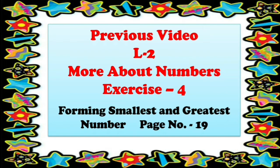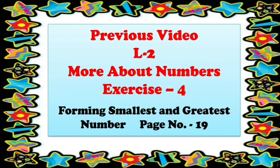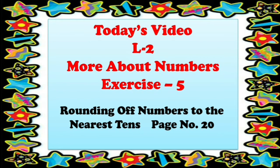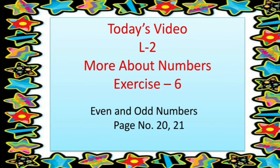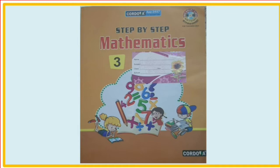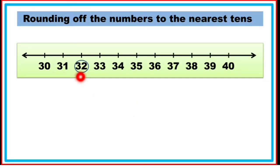In our previous video, we did exercise 4, forming smallest and greatest number. We also did exercise 7, quotient 2, quotient 3, and horse quotient. In today's video, we will do exercise 5 — rounding of numbers to the nearest tens, given on page number 20. We will also do exercise 6, even and odd numbers, given on page number 20 and 21. So beta, take out your maths book.